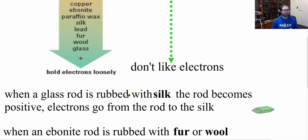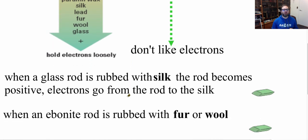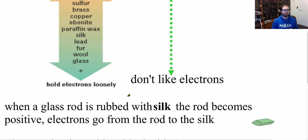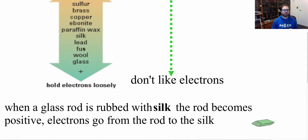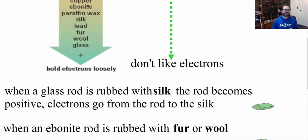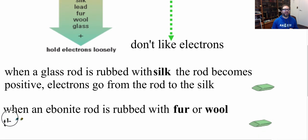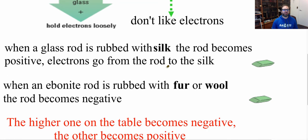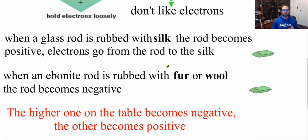Now let's look at my second one. An ebonite rod is rubbed with fur or wool. So here, I have an ebonite rod being rubbed with fur or wool. So what's that going to give me? Well, the ebonite is above, so it is going to gain electrons, so the ebonite will be a negative charged object. The main thing to remember is the higher one on the table becomes negative, and the lower one always becomes positive.